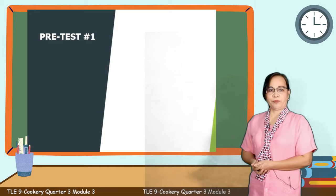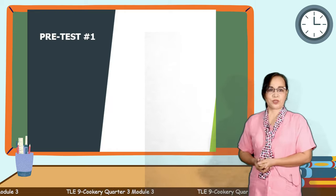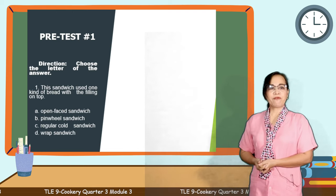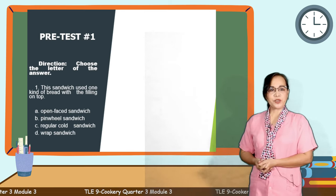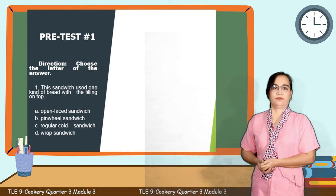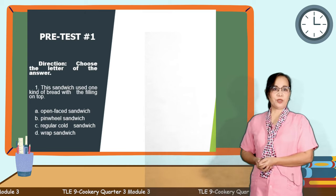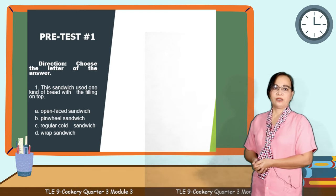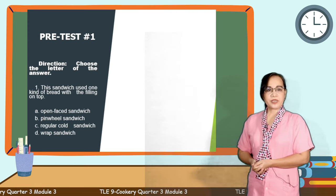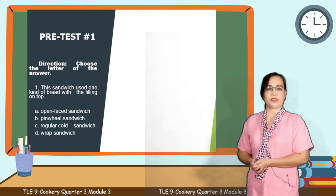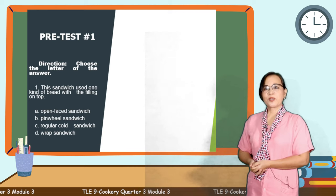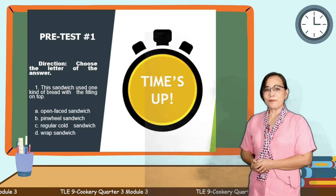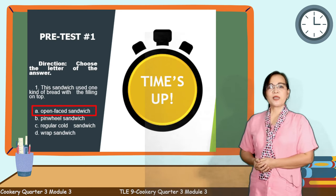Let's check your prior knowledge on our new lesson by answering questions. Choose the letter that describes your answer. You have 5 seconds to answer each question. Write your answer in the comment section below. Question number 1: This sandwich uses one kind of bread with a filling on top. Is it letter A, open-faced sandwich? Letter B, pinwheel sandwich? Letter C, cold sandwich? Or letter D, rough sandwich? Your 5 seconds start now. Time's up! It's letter A, open-faced sandwich. You got it right!